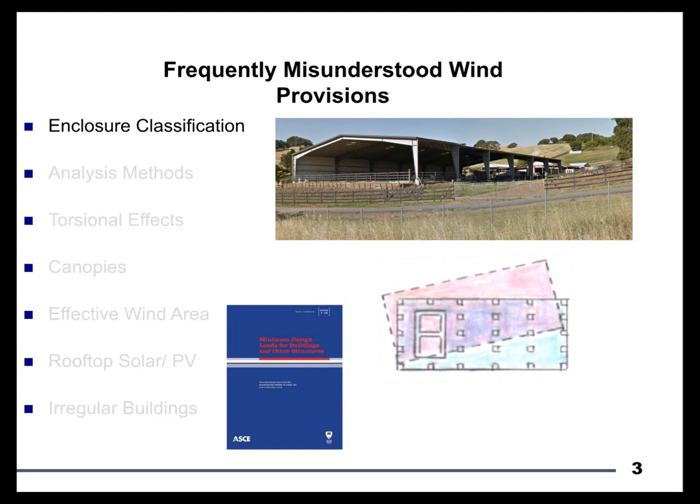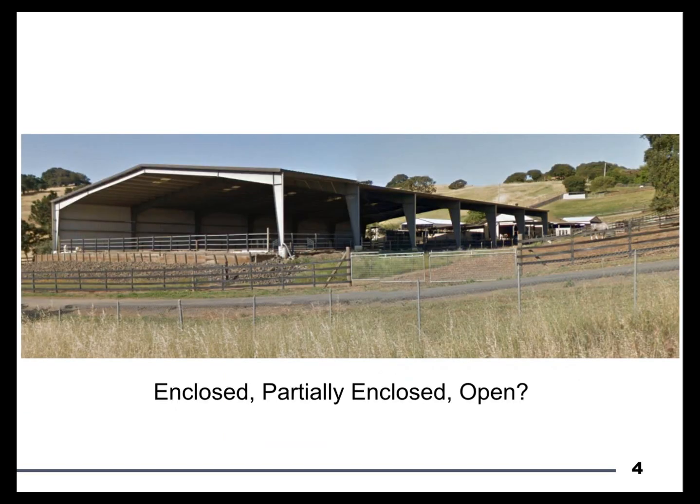With that, we'll go ahead and dive into our first topic: enclosure classification. When we do our enclosure classification, historically we've had three options available to us. I've shown an agricultural building here that's actually in my neck of the woods in the Bay Area — a building that's probably wind controlled, very lightweight. Even in seismic country, we have to figure this out: is it enclosed, is it partially enclosed, or is it open? I want to spend a little bit of time talking about what those definitions look like.